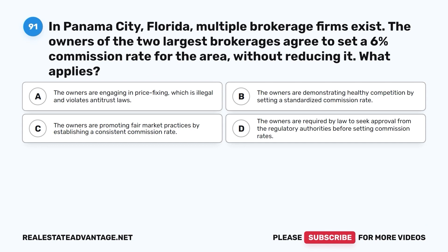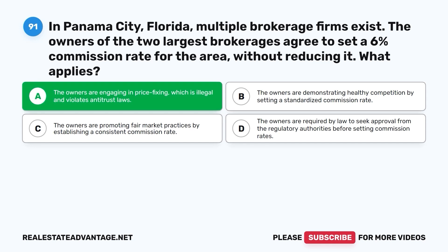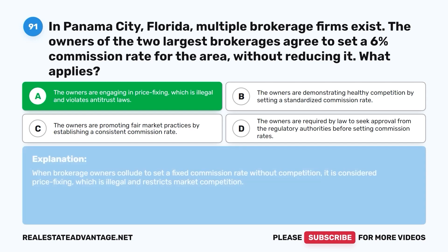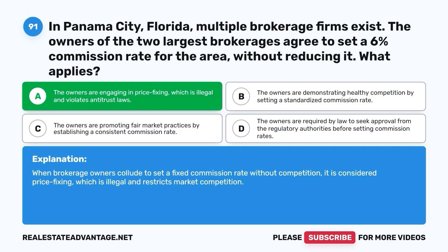Question 91. In Panama City, Florida, the owners of the two largest brokerages agree to set a 6% commission rate for the area without reducing it. What applies? A. The owners are engaging in price fixing, which is illegal and violates antitrust laws. B. The owners are demonstrating healthy competition by setting a standardized commission rate. C. The owners are promoting fair market practices by establishing a consistent commission rate. D. The owners are required by law to seek approval from regulatory authorities before setting commission rates. The correct answer is A. When brokerage owners collude to set a fixed commission rate without competition, it is considered price fixing, which is illegal and restricts market competition.